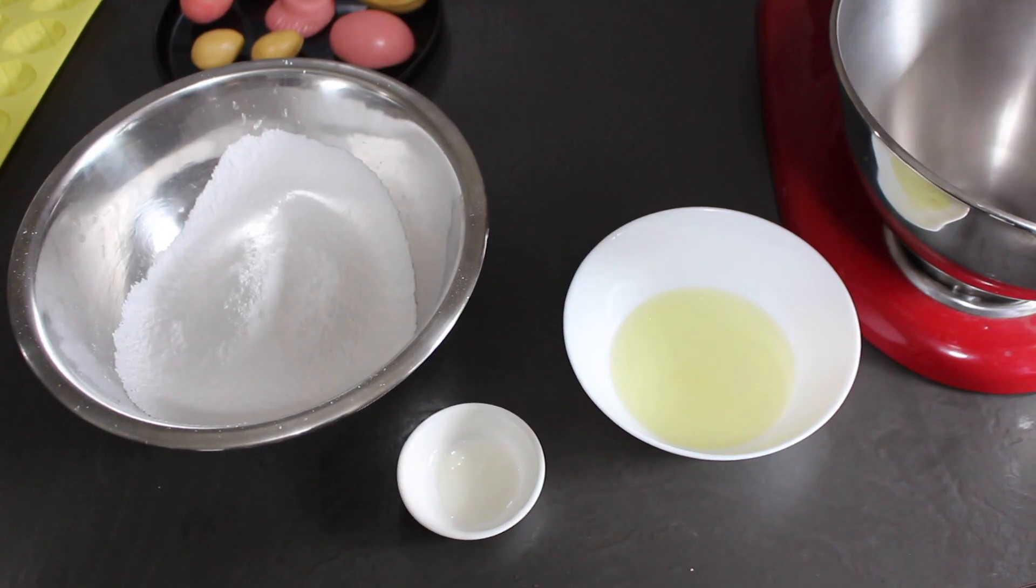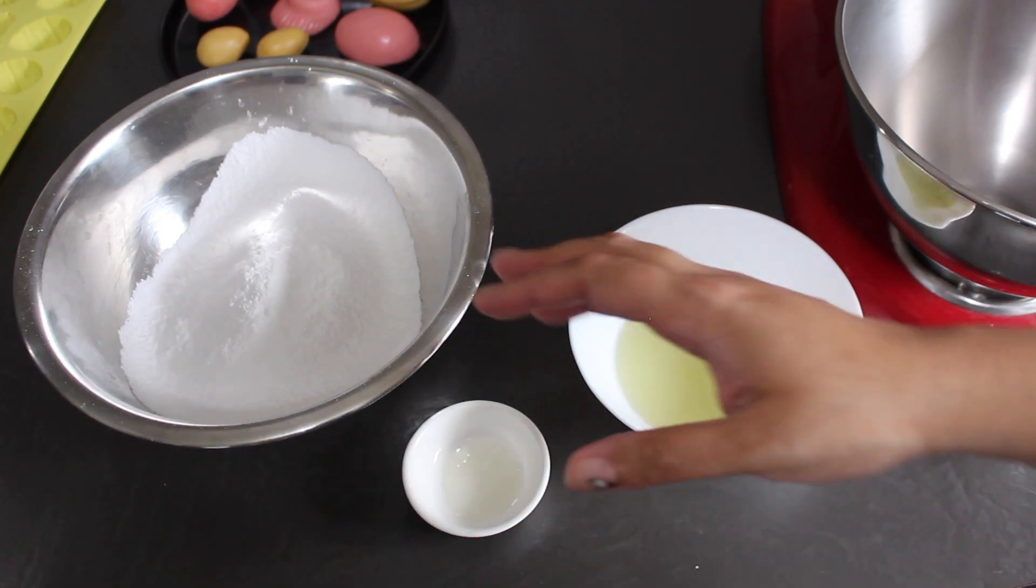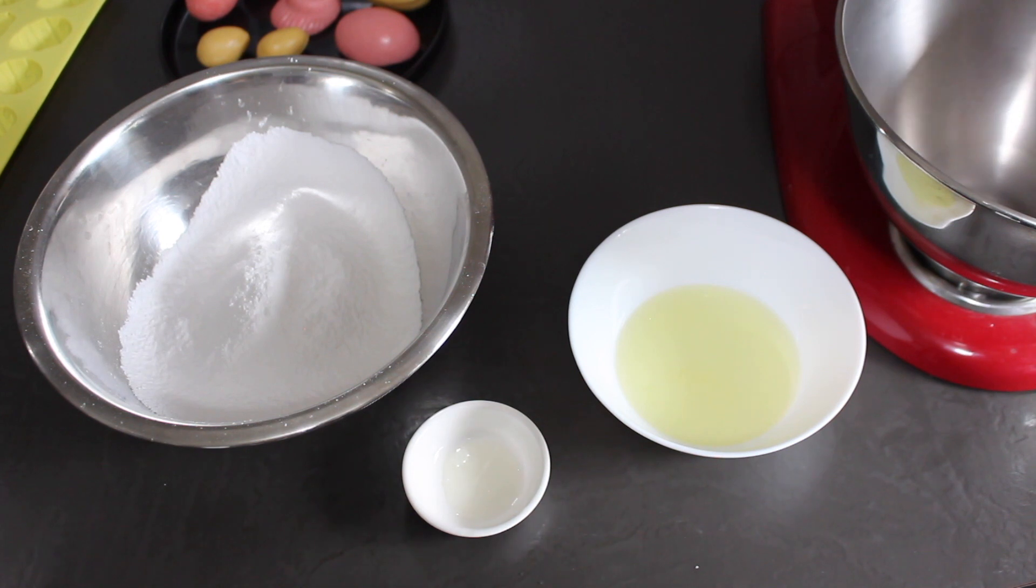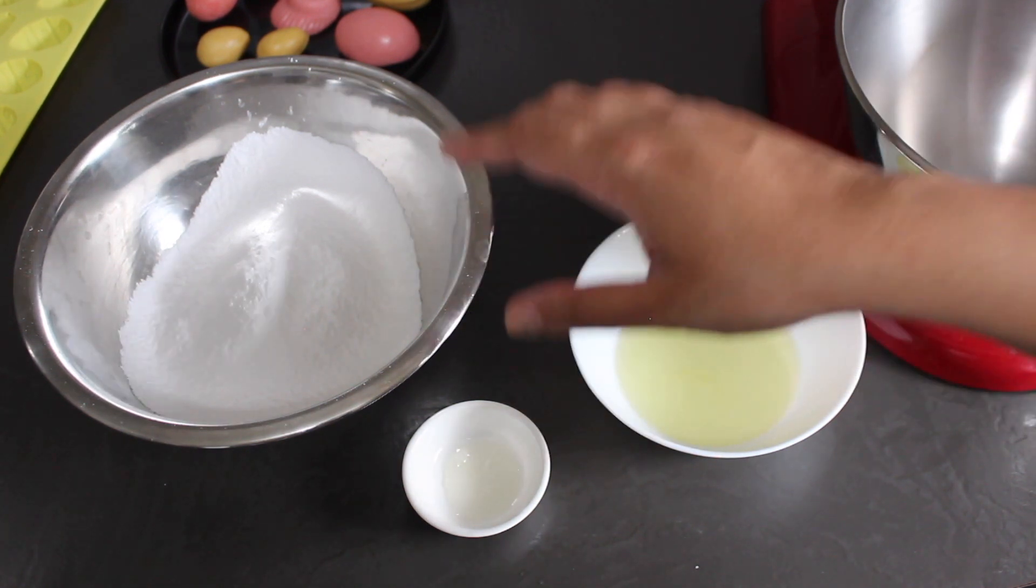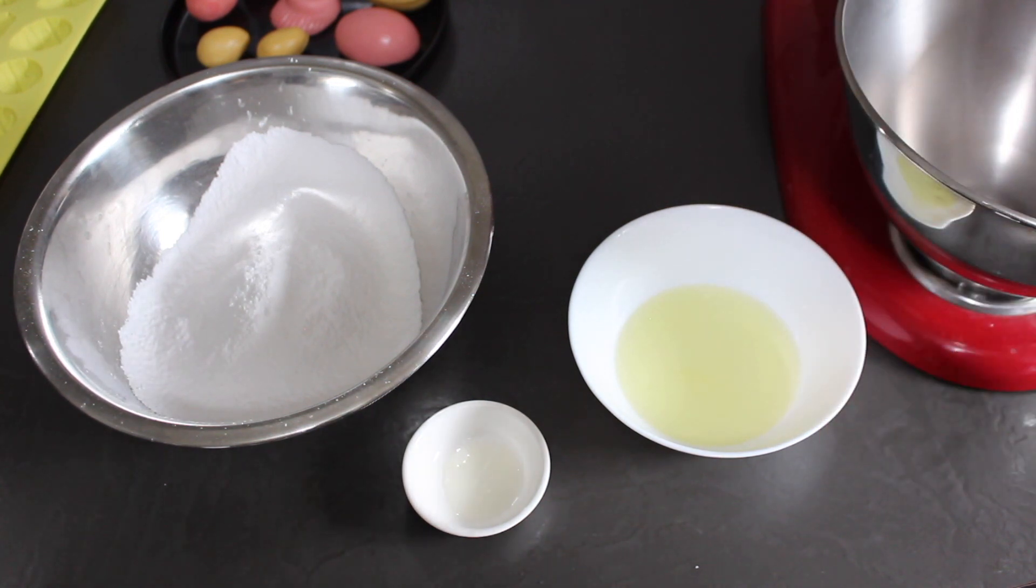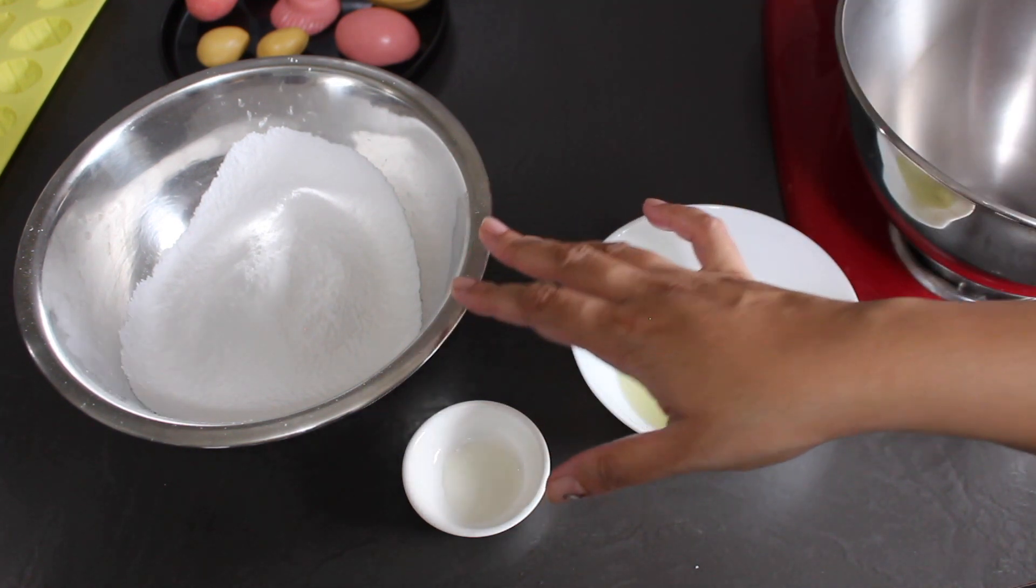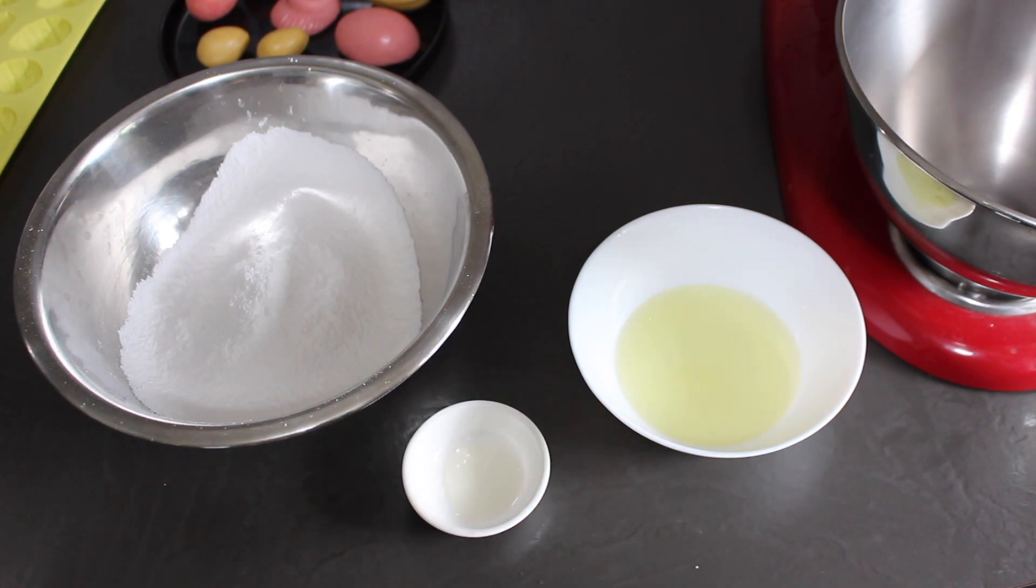For our royal icing, here's what we're going to need. I've got one egg white in here. You will need about 180 grams of sifted icing sugar. It's important to sift it because if there's any lumps and those lumps get stuck in the tip of your nozzle, you're going to have a hard time piping nice smooth lines. So sift your icing sugar.